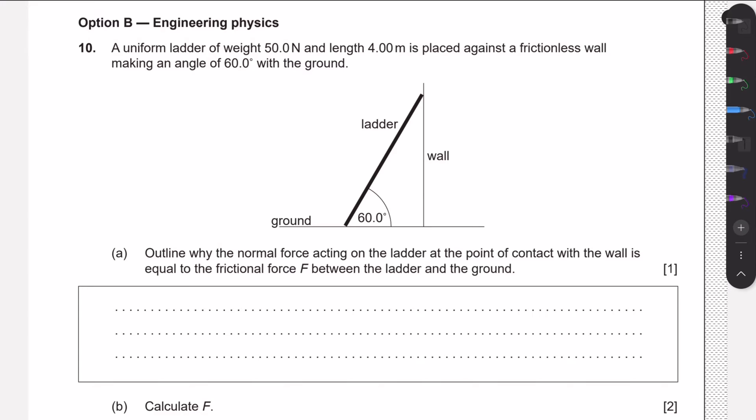The ladder has a weight of 50 newtons, a length of 4 meters, and is placed against a frictionless wall making an angle of 60 degrees. We need to outline why the normal force acting on the ladder at the point of contact with the wall is equal to the frictional force between the ladder and the ground.